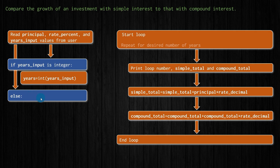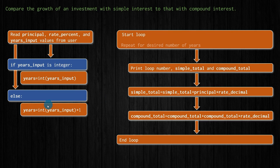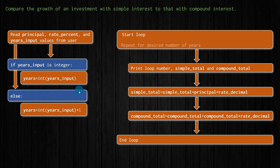If they enter a decimal like 6.5 years, I'm going to round it up — so 5.3 becomes 6 years, 7.5 becomes 8. If they enter something that's not an integer, I take that value, convert it to an integer — which drops the decimal part — and then add one. So for 7.5, Python drops the decimal giving 7, then I add one to get 8 years for the calculation.